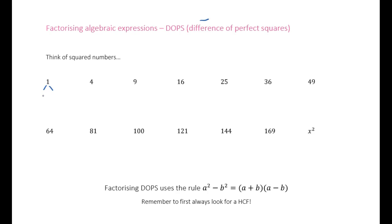For 1, 1 times 1 or 1 squared gives us 1. For 4, 2 times 2 or 2 squared gives us 4. 3 squared gives us 9. And we can continue on.